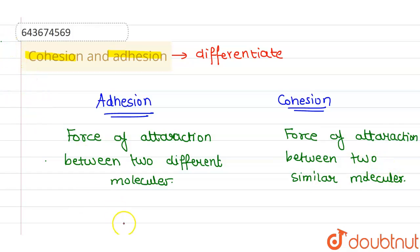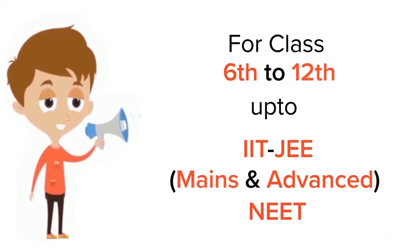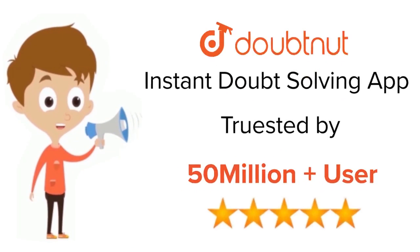For example, if there are two molecules A and B, and A and B are attracted by some force, that force is called adhesion. But if A and A are attracted by some force, that force is called cohesion. That's the basic difference between the two. I hope you understood. Thank you. For class 6–12, IIT JEE, and NEET level.